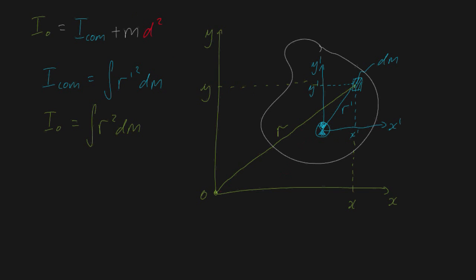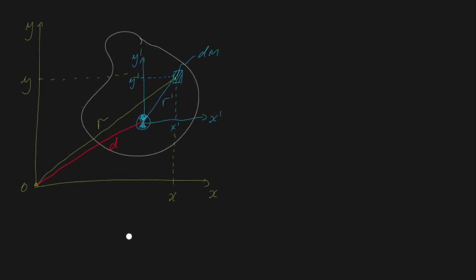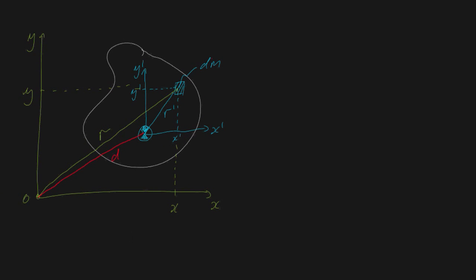Not only that, but we can also draw a few more things in here. We can say that the fixed distance between our two parallel axes is going to be drawn in red, and I'll call that distance d — d will be a constant, always the distance between our two fixed axes. Let me redraw these distances to the right without the picture of our object. So this is our distance r in green, this is our center of mass, this is our distance r-dash, and this fixed distance here is a distance d.